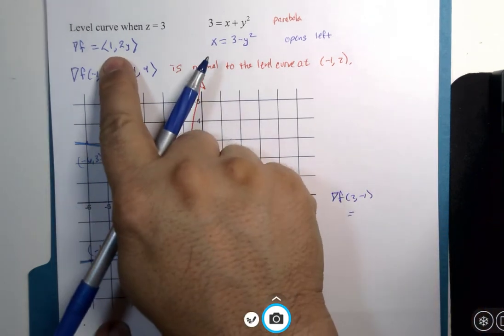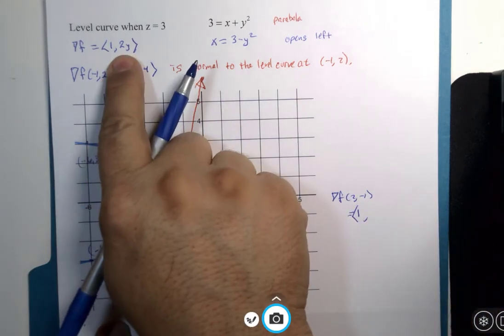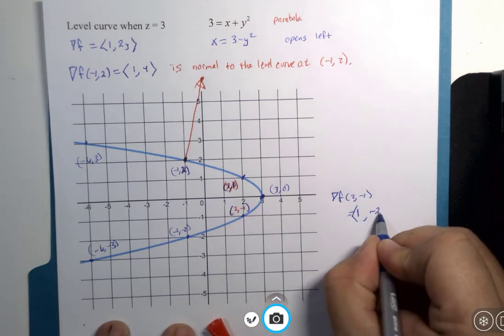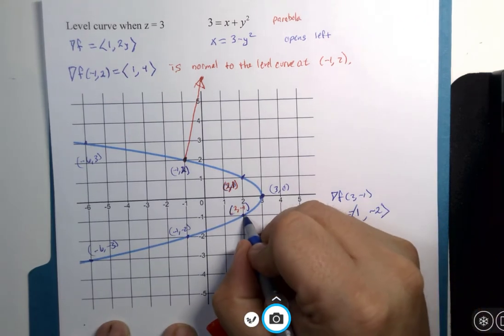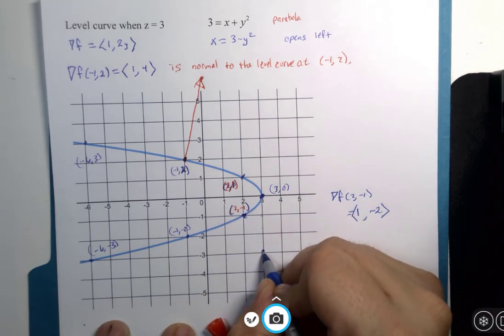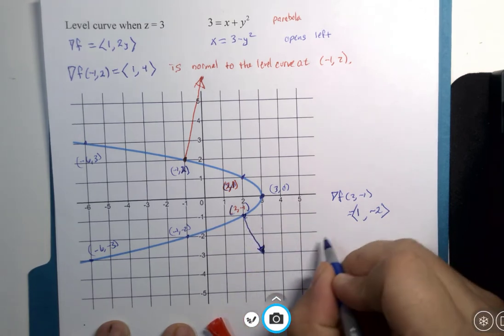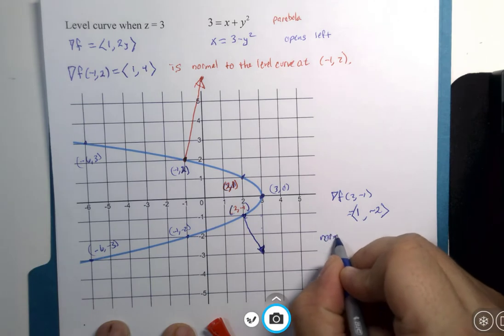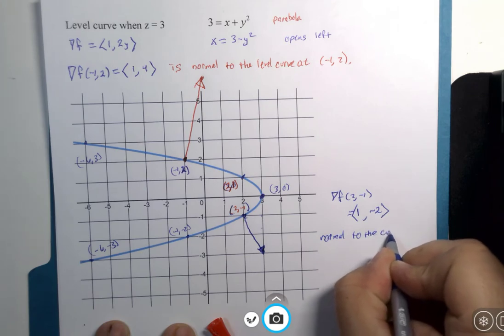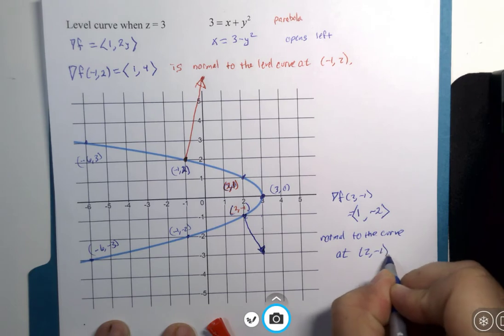Well, the gradient x component is always 1, and the y component is 2 times whatever the y value is. And if y is negative 1, it would be negative 2. So I would start here and go 1 unit to the right and 2 units down. And that vector is normal to the curve at the point 2, negative 1.